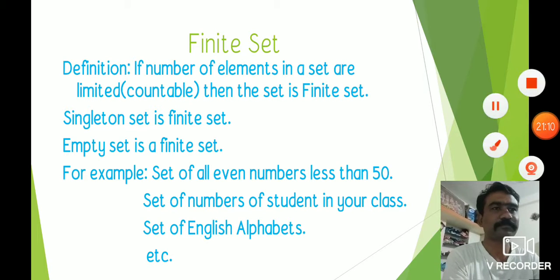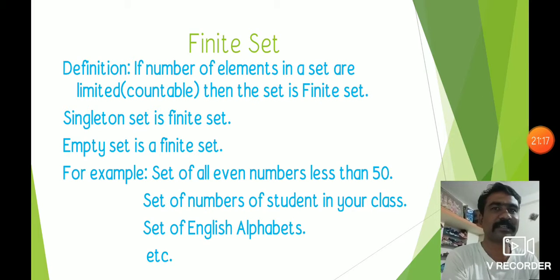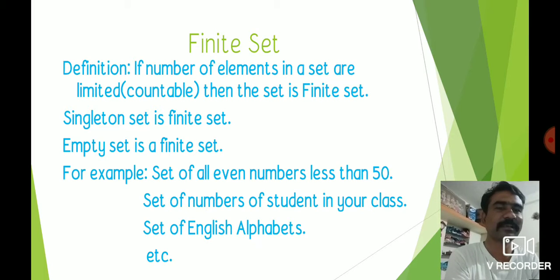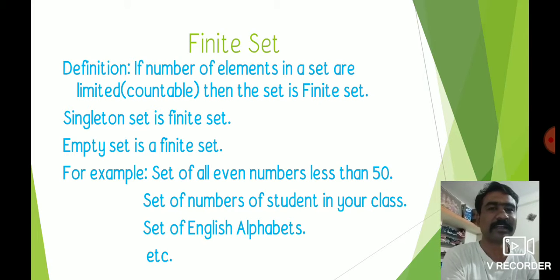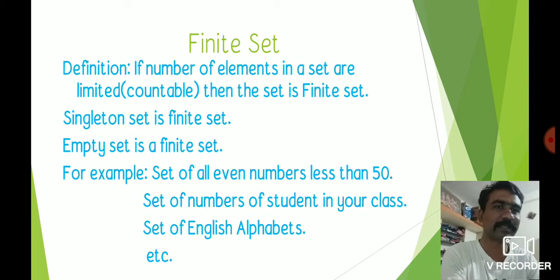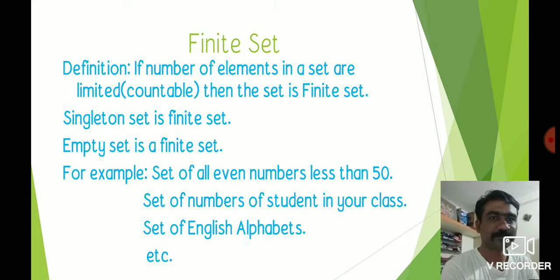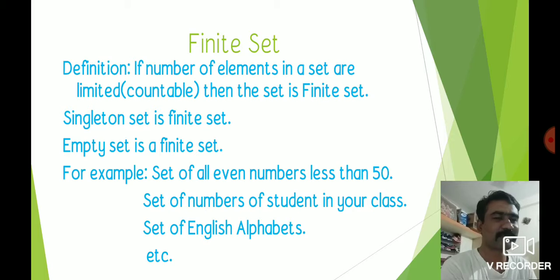Another type: finite set — if the number of elements in a set are limited and countable, then the set is a finite set. Singleton set and empty set are also finite sets because both are countable. For example: set of all even numbers less than 50 (countable), set of number of students in your class (countable), and set of English alphabets (26 alphabets) — all are finite sets.